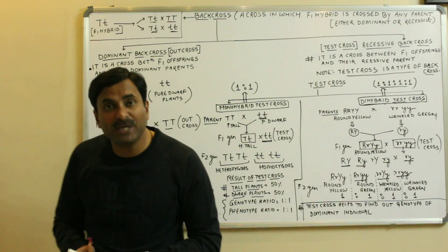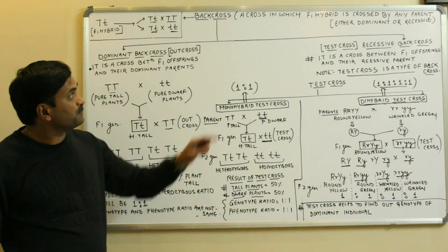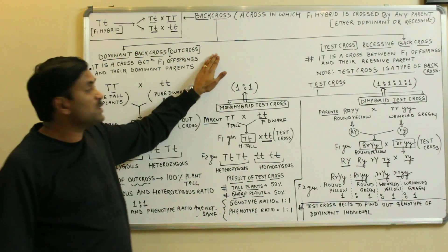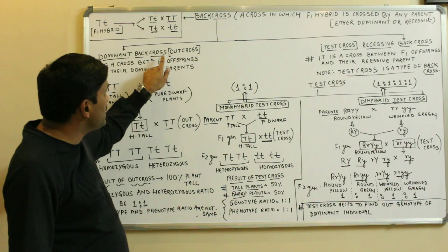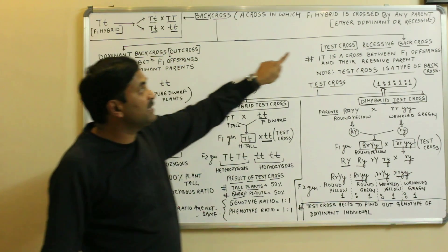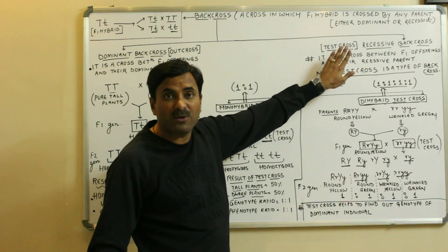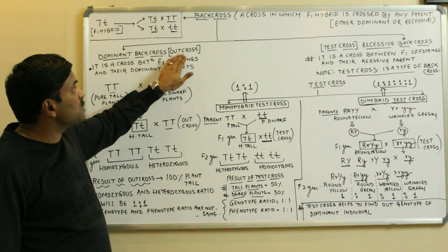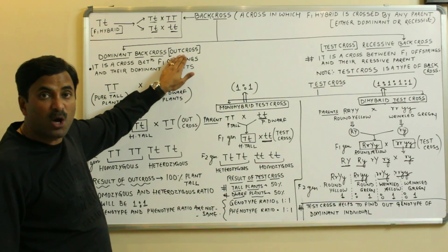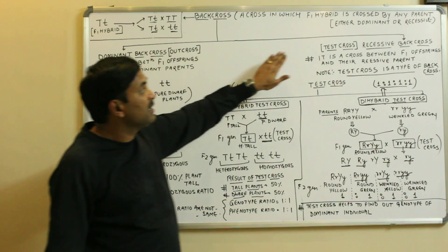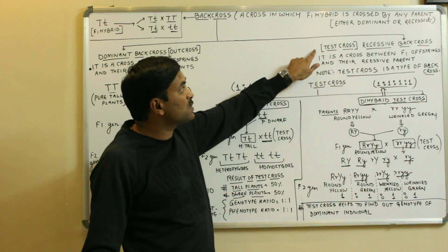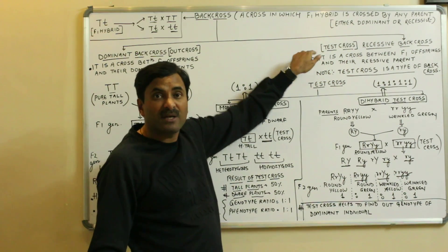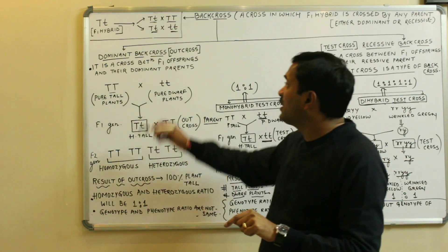The back cross is basically of two types: one is known as the dominant back cross and another is known as the recessive back cross. The dominant back cross is also called the out cross, and the recessive back cross is also called the test cross.